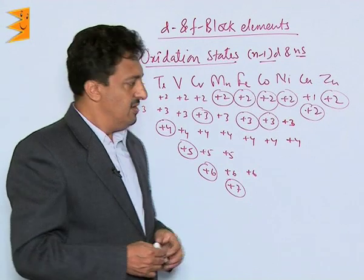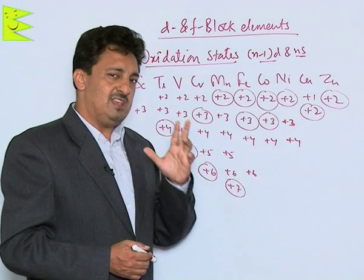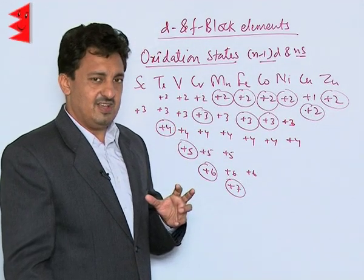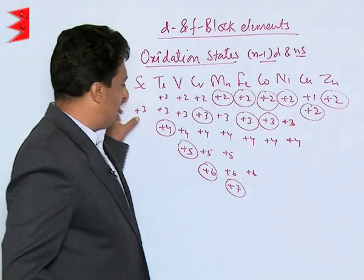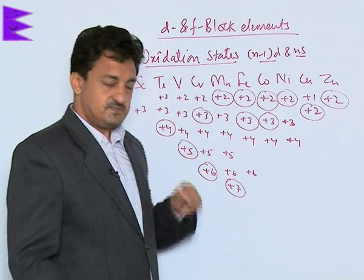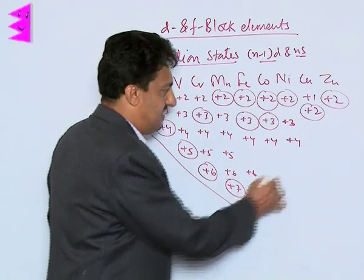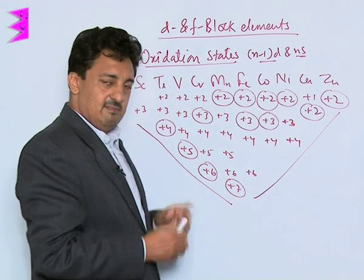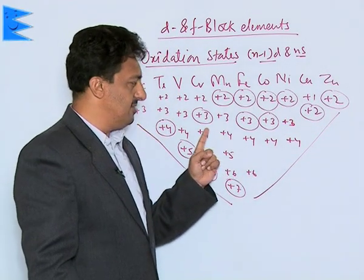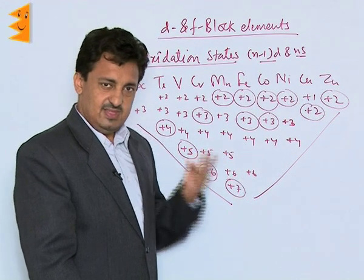A peculiar thing about these oxidation states is that the number of oxidation states increases up to the middle of the series and then decreases. The graph shows this value increasing and then decreasing. The reason is that the number of unpaired electrons increases up to the middle of the series, and then due to pairing of electrons, it decreases.